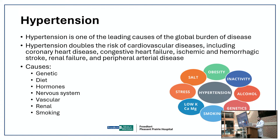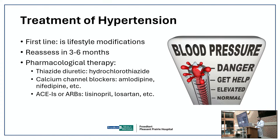Lifestyle changes are first line, but some people — like those with arthritis — can't jog or do intensive activity, so we have to use medications tailored to the individual. Not every medication fits all. For Stage 1 hypertension, we try lifestyle changes and reassess in three months. For Stage 2, like blood pressure of 160 over 90, diet alone won't lower it enough, so we start medication.